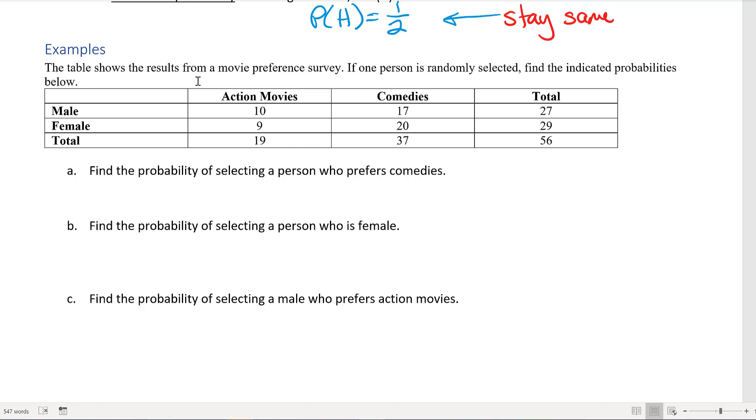We have to think about what is the sample space—how many people are actually chosen here. It looks like 56 total people, male, female, whatever they picked, were actually surveyed. So 56 is our number in our sample space. We're trying to find the probability of selecting someone who prefers comedies. When I'm talking about comedies, I'm talking about this column here. I don't care if they're male or female, I just care about the total number. The number of people who prefer comedies is 37, so the probability of choosing someone who likes a comedy is 37 out of 56.